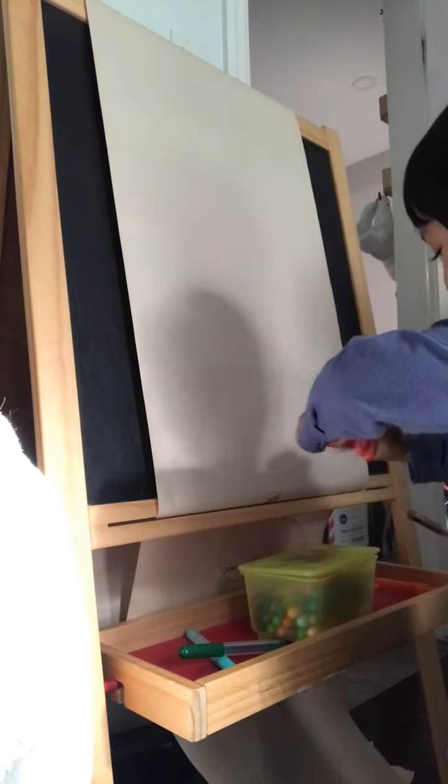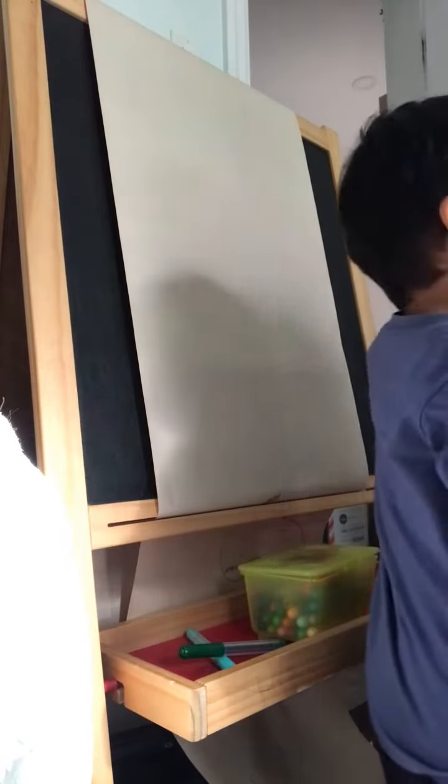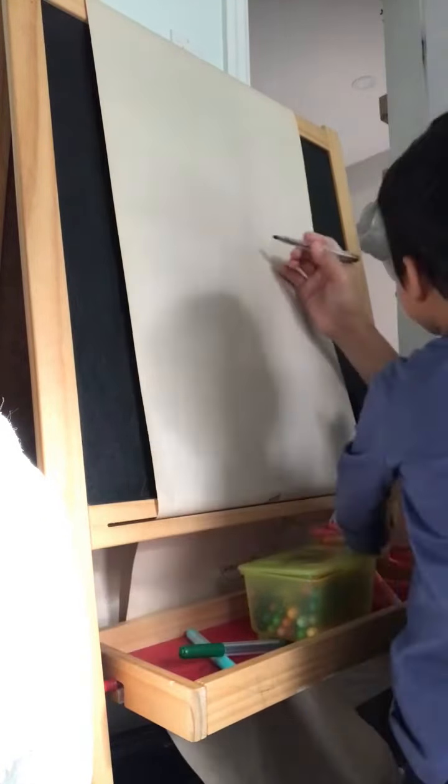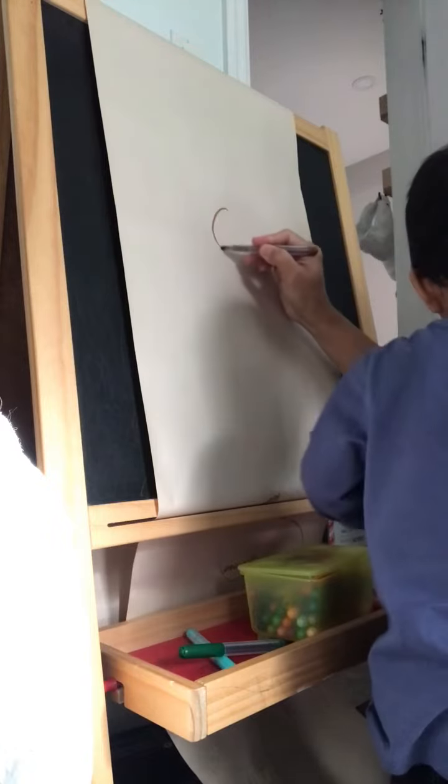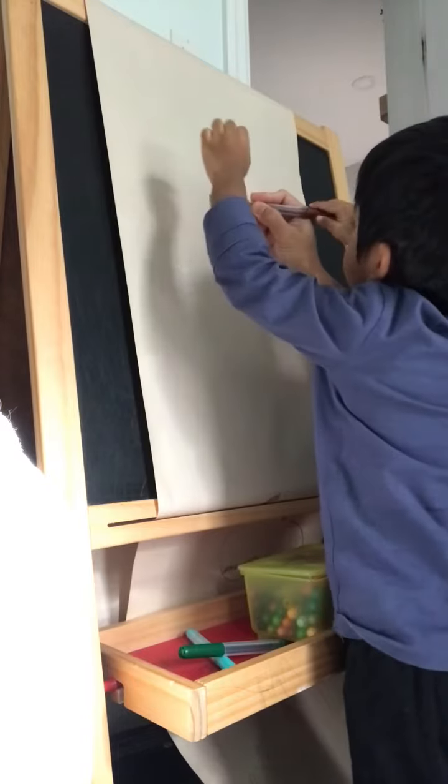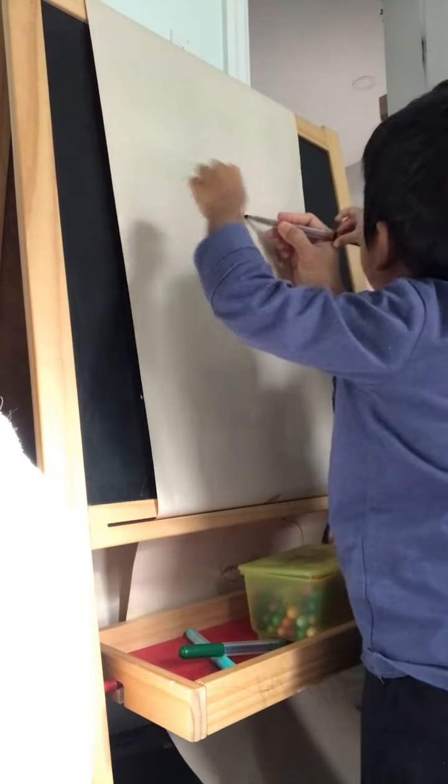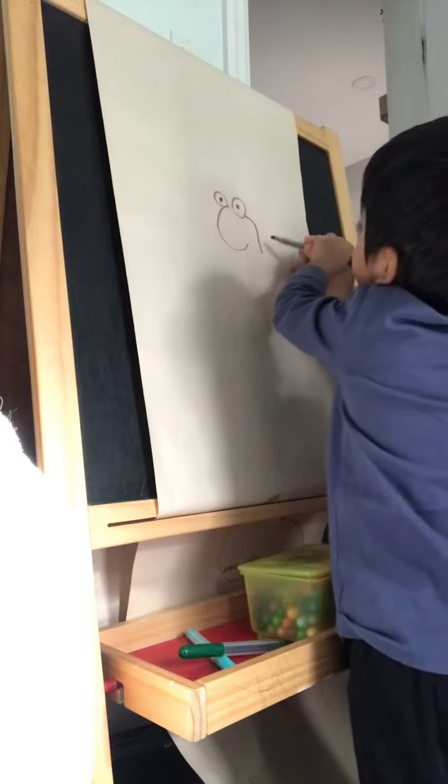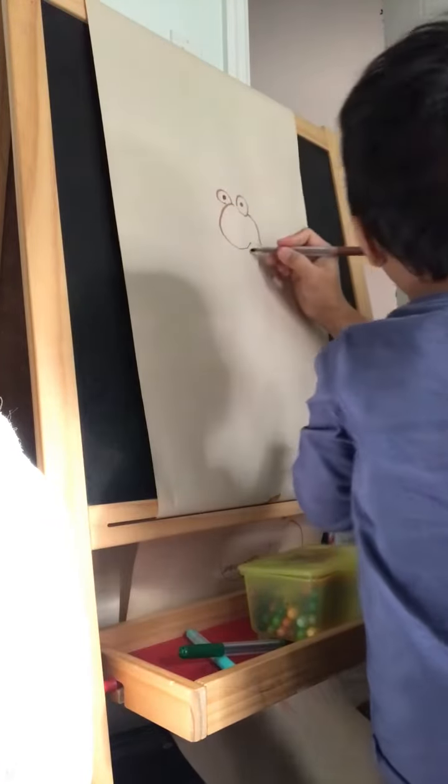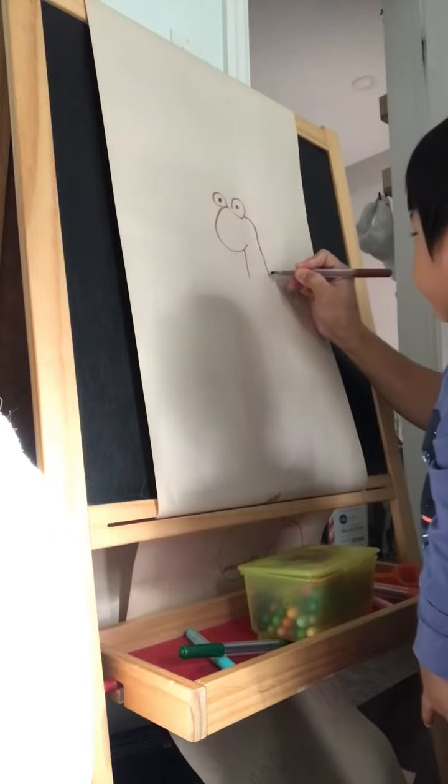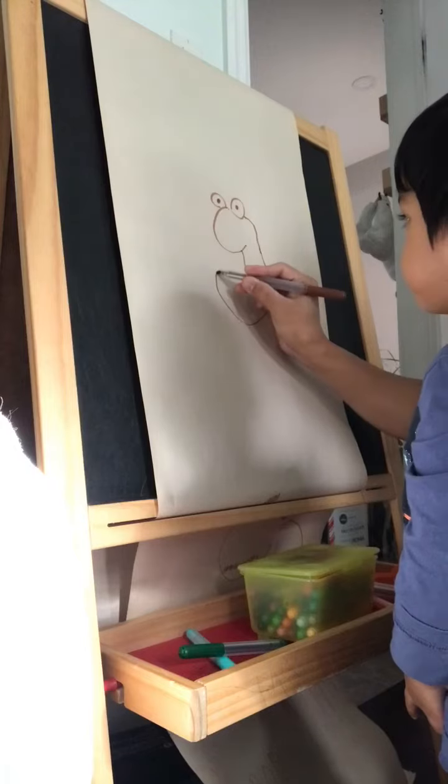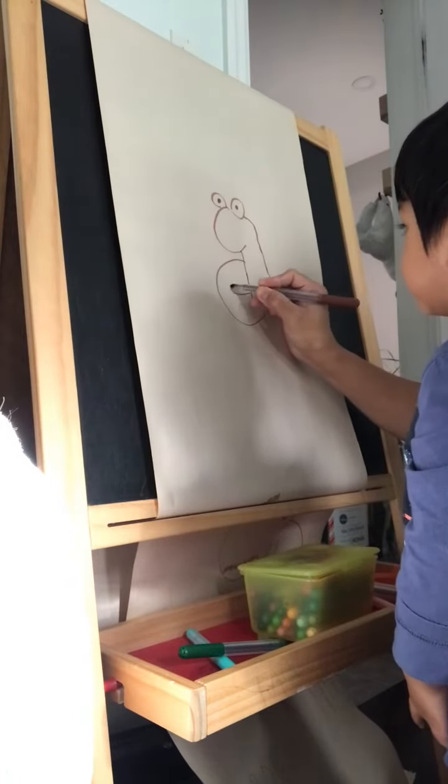Daddy will draw worm. What color is the worm? What color? I need brown. I will draw worm with big round eyes. Big round eyes. Hello Mr. Worm. Mr. Worm, how are you?